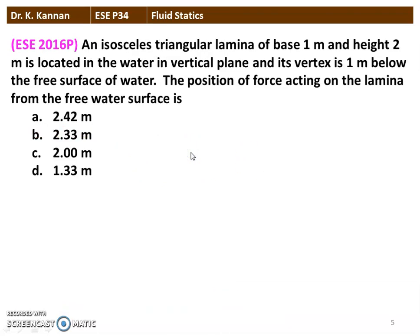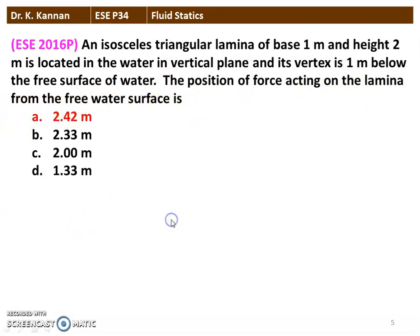The next question, again from the 2016 question paper: an isosceles triangular lamina of base 1 meter and height 2 meters is located in water in a vertical plane, and its vertex is 1 meter below the free surface of water. The position of the force acting on the lamina from the free surface of water is to be determined. The correct answer is 2.42 meters.